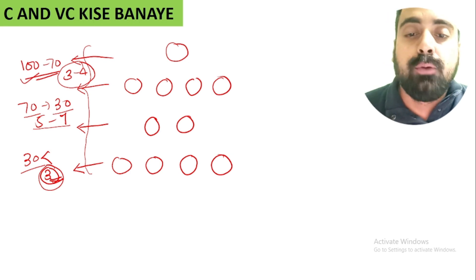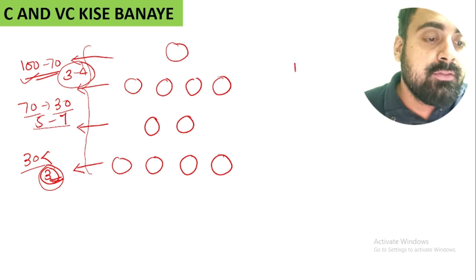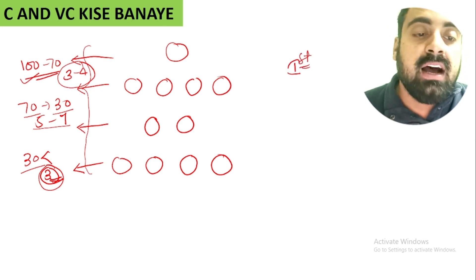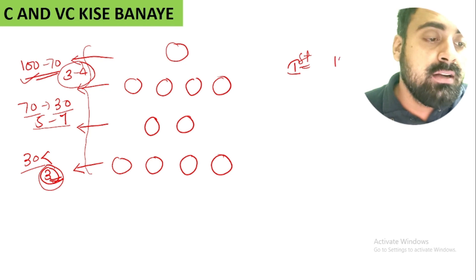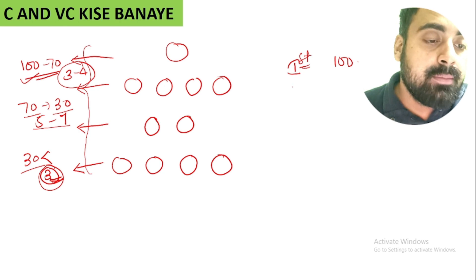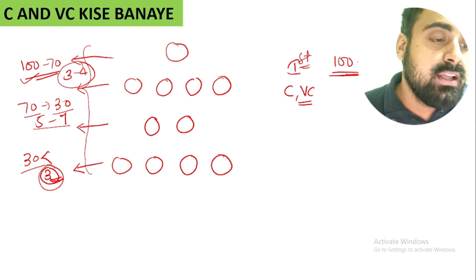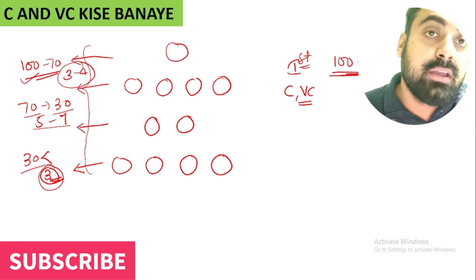Now we will talk about the first possibility. If you have a captain and vice captain from the 100–70% player bucket, what will happen? If there are 1,000,000 teams and the average selection criteria is 85%, then approximately 850,000 teams will share the same captain and vice captain.